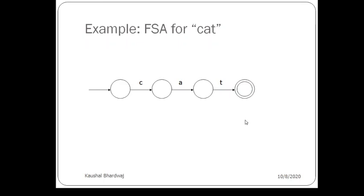Let us consider an example: the word 'cat'. We make a simple automaton where from the initial state, if we get the character 'c', we change to a new state. In that new state, if we get 'a', we transition to another state, meaning we have read 'ca' so far. From that state, if we get 't', we reach the final state. If we do not get 't', the system may halt.